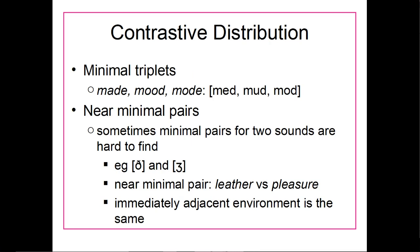There can also be minimal triplets or even more. For example, 'made,' 'mood,' and 'mode' have three different vowel sounds in the same position between the same consonants, yet all three words have different meanings. This is another example of contrastive distribution.